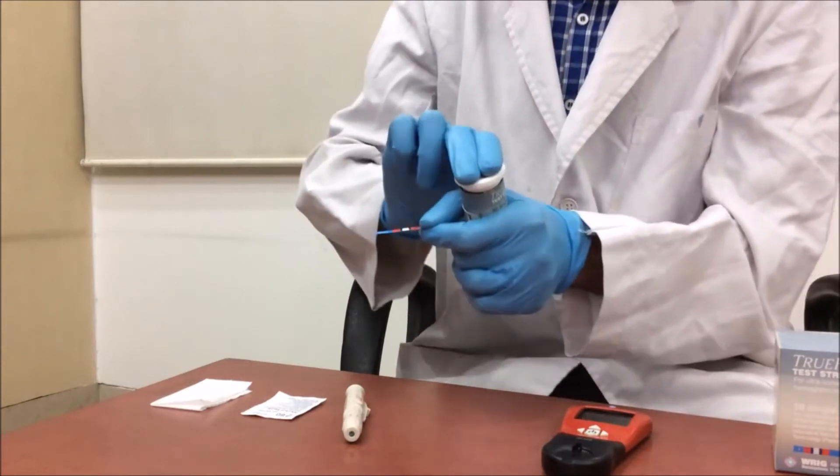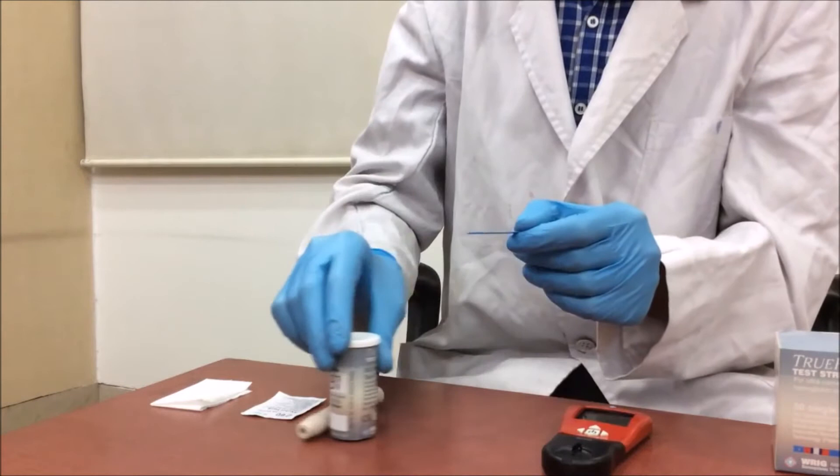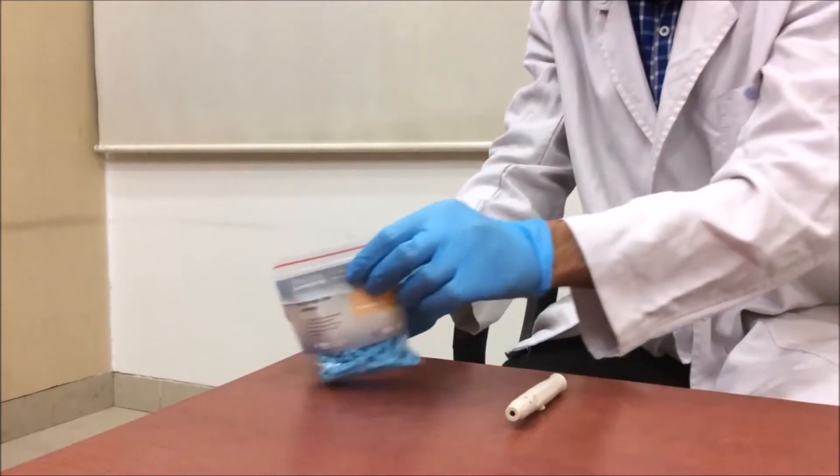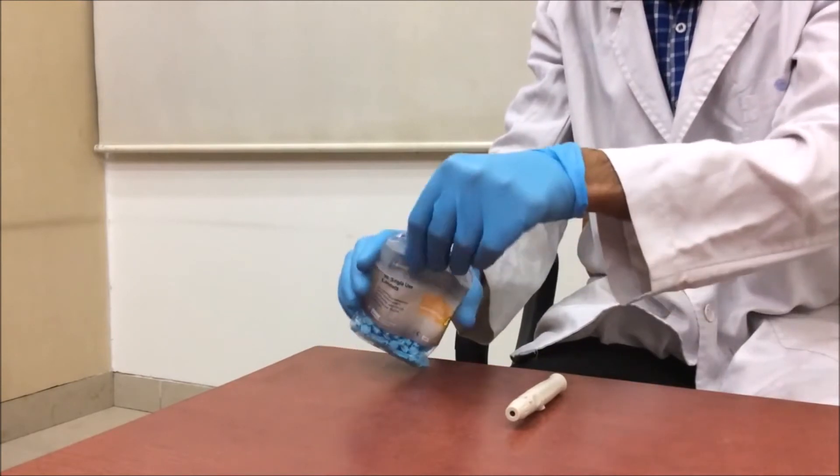Insert the strip in the test area. A blood drop blinks on the screen. Take one lancet from the pack of lancets.